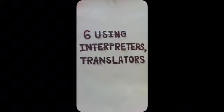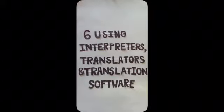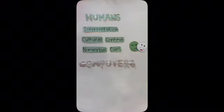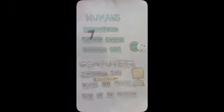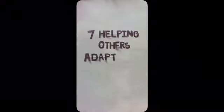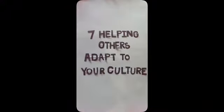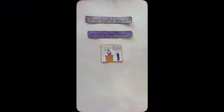Step 6 — using interpreters, translators, and translation software: humans use spoken communication and help us understand cultural context and nonverbal cues. Computers use written communication, and translation tools can be quite useful with individual words and phrases to give you the overall gist of a message. Step 7 — helping others adapt to your culture will create a more productive workplace and teach you about other cultures as well. Offer useful advice in a respectful manner and look for opportunities to help people fit in and adapt their communication style.